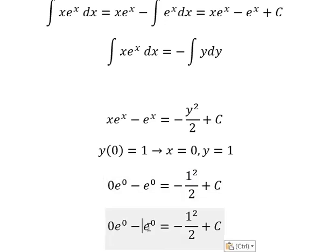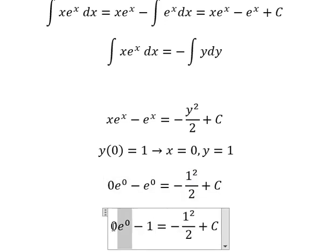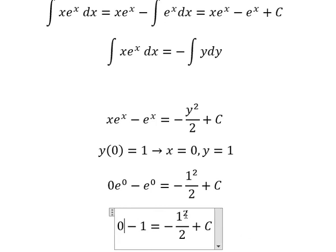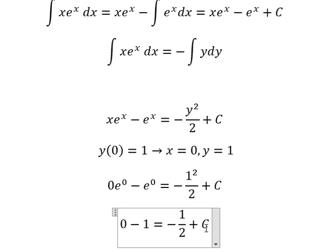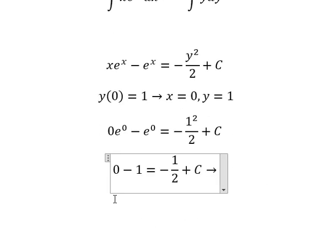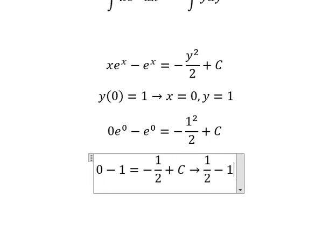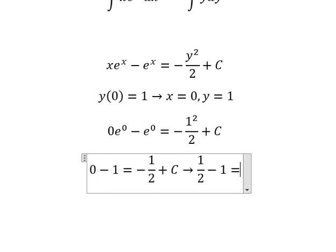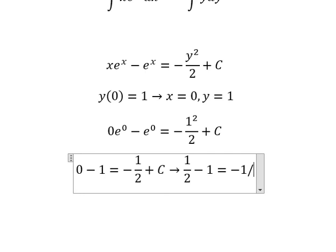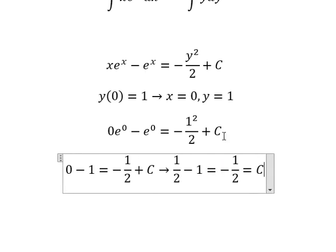This term gives 1, this one gives 0, and y squared over 2 gives 1 over 2. Moving negative 1 over 2 to the left, we get c equals negative 1 over 2.